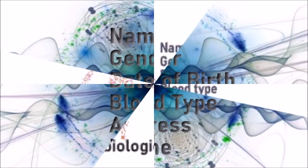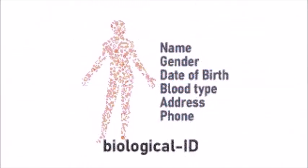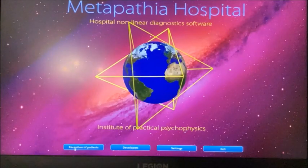Required information that determines your Quantum ID are name, gender, date of birth, blood type, address, and phone.